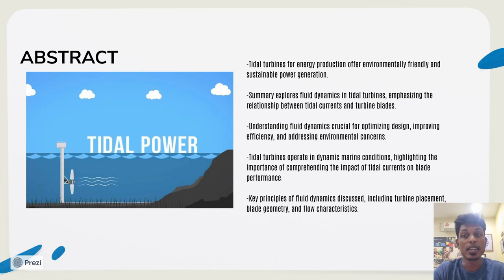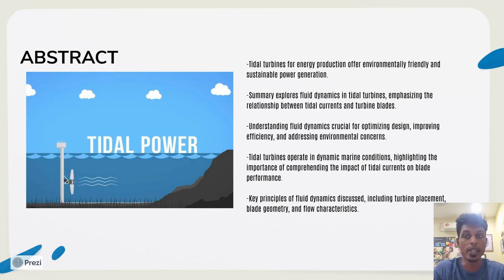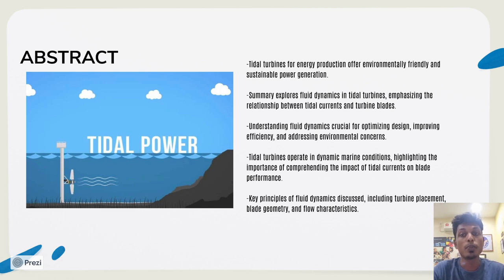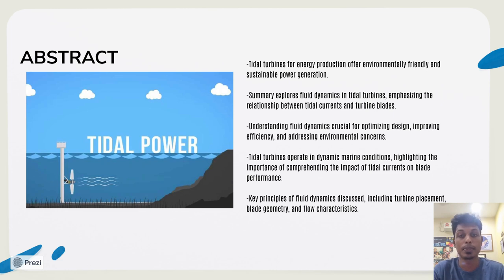This summary emphasizes fundamental principles of fluid dynamics governing the extraction of tidal energy, including the effects of turbine placement, blade geometry, and flow characteristics on the overall performance of the system. The investigation utilizes computational modeling, experimental analysis, and field observations to unravel the complexities of fluid-structure interaction within tidal turbine systems.